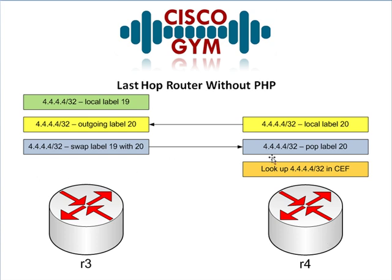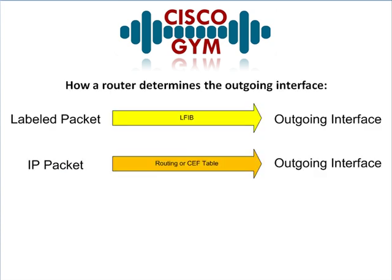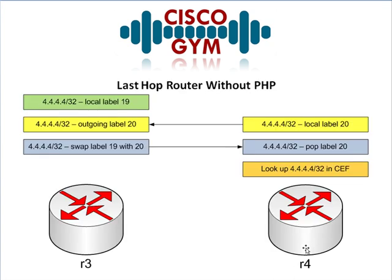Now back in R4 — a packet comes in with label 20. R4 says oh, I know what that label is, that's label 20. What do I do with that? Because this is the end of the line, I don't have anything from anybody else giving me labels for this — it's directly connected. So what I do is go ahead and pop this label. I've got this packet, I pop off label 20. But now I've got a packet with no label on it. So if we go back and review: labeled packet — look it up in the LFIB. Unlabeled packet — go ahead and look it up in the CEF table. So R4 is actually going to do a second lookup to get the routing — untagged, send it to the CEF table.